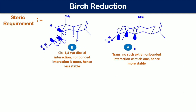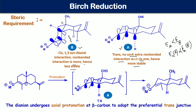Regarding the steric requirements of transition states A and B: in transition state B the ring junction is cis and there is a 1,3-syn-diaxial interaction, meaning non-bonded interaction is greater, making it less stable. In transition state A, no such extra non-bonded interaction is present relative to the cis case, so it is more stable and has a lower activation energy. As a result, the dianion undergoes axial protonation at the beta carbon through transition state A to adopt the preferential trans junction.